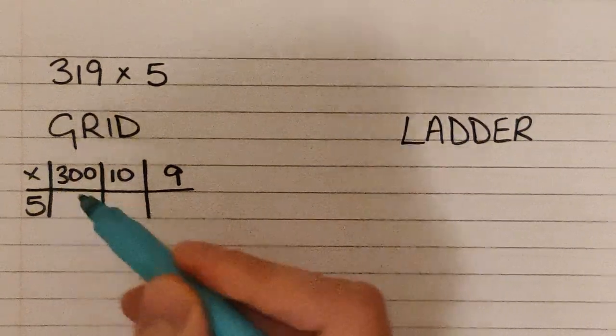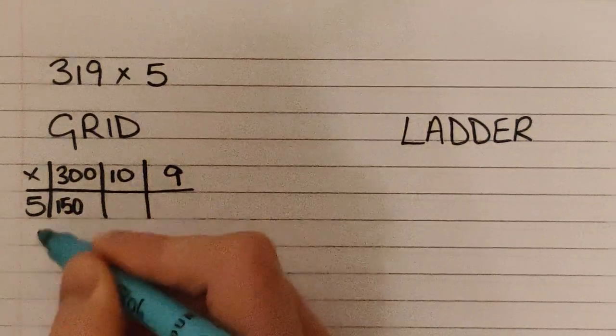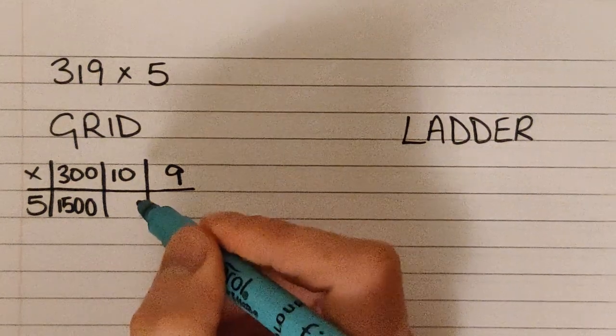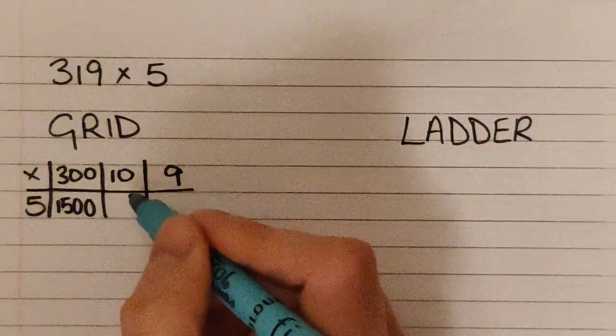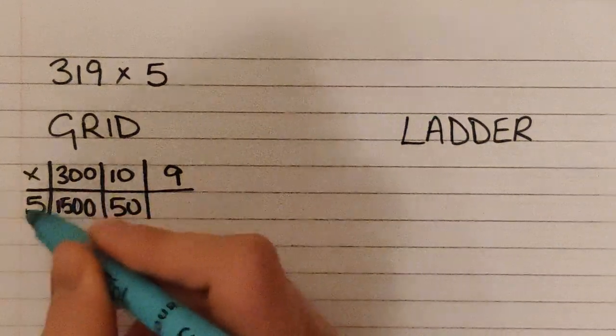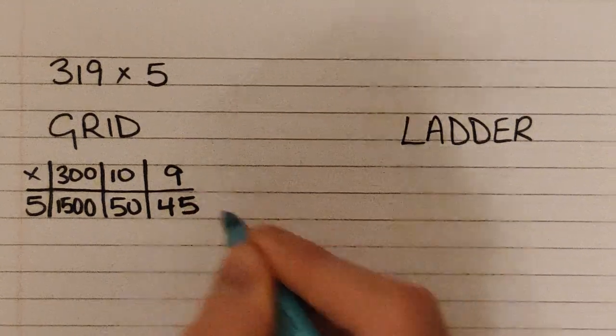You know 5 times 3 is 15, so we know 5 times 30 is 150 and 5 times 300 is 1500. Then we're going to look at the tens column. 5 times 10 we know is 50, and if we know our 5 or our 9 times table we know 5 times 9 is 45.